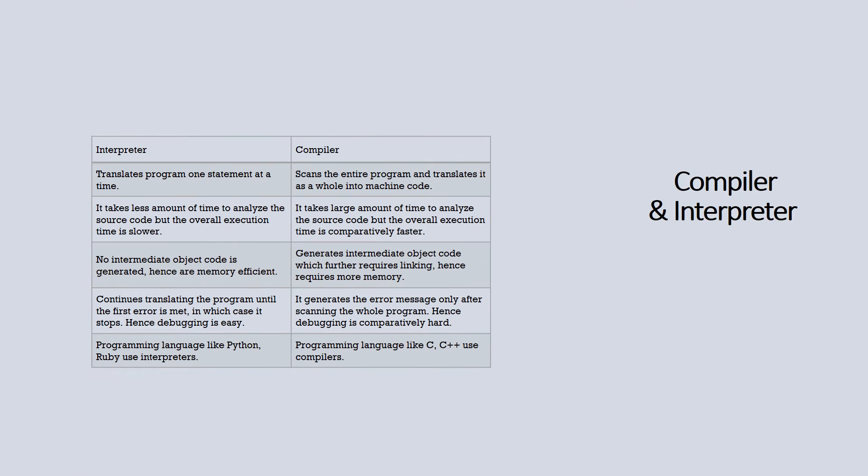Now I'm going to tell you about interpreters and compilers. When you're writing a program, an interpreter will correct you one statement at a time, and a compiler will correct you when your whole program is done.